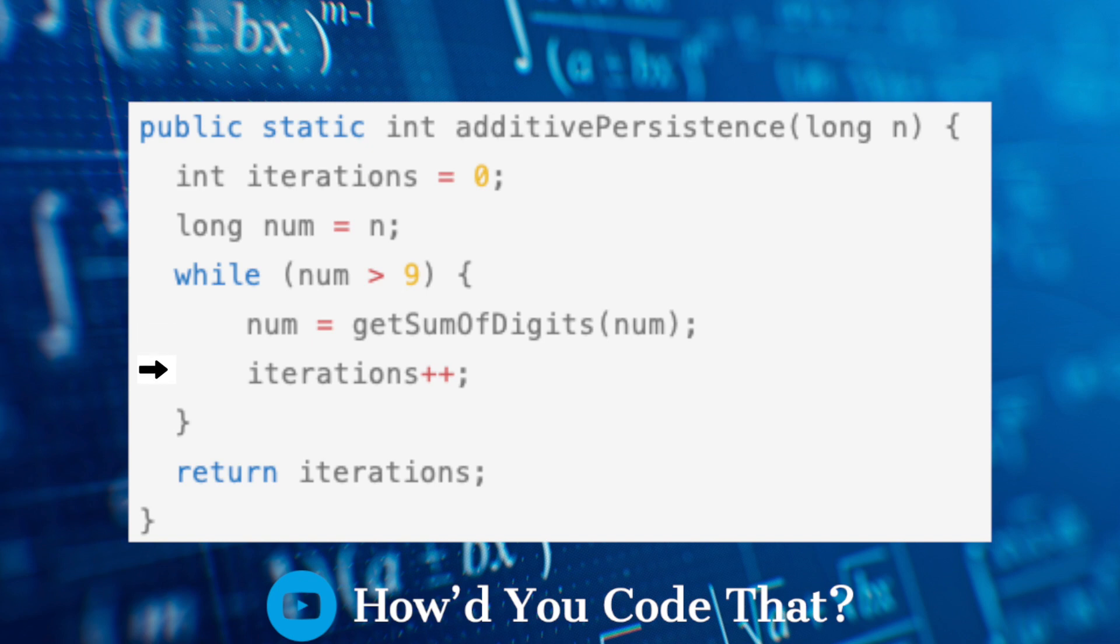Next, the iterations variable is incremented by one. Upon completion of the while loop, the value of iterations is returned to the caller.